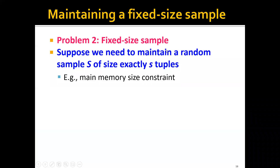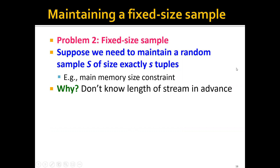We need to maintain a random sample S of size exactly S tuples. Why do we need this? Because we don't know the length of a stream in advance. However, one machine or several machines can only have fixed size in main memory, so we have no choice but to sample a fixed size of data.